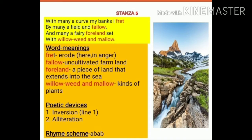The second poetic device is alliteration — the repetition of a consonant sound at the beginning of two or more consecutive words. Here we can see 'field, fallow' — the 'f' sound can be heard. Again 'fairy, fallow land' — again the 'f' sound. And third, 'willow, weed' — the 'w' sound can be heard. The rhyme scheme is ABAB and the rhyming words used are 'fret' and 'set', 'fallow' and 'mallow'.